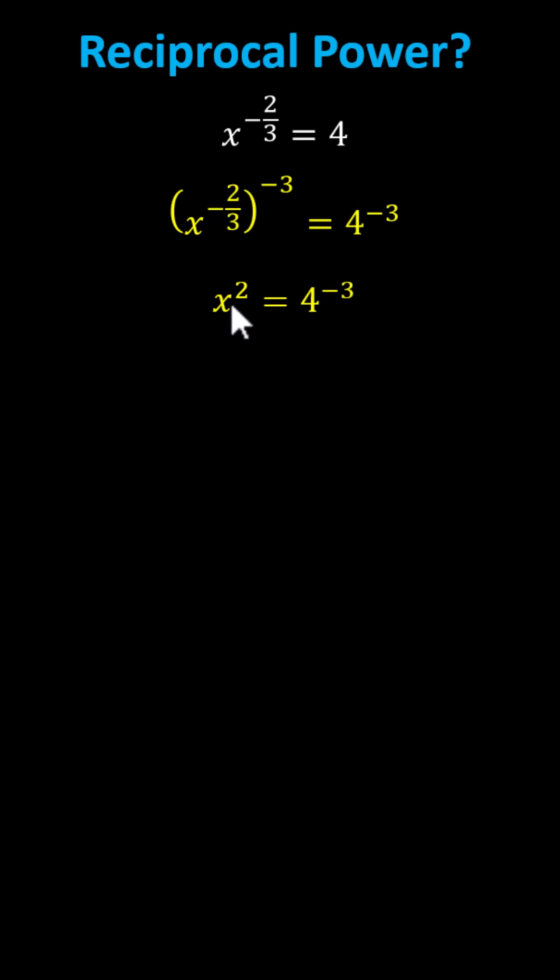To solve for x, we can now either square root both sides of the equation or raise both sides to the one-half power, but we also have to include a plus or minus on the right. Let's raise both sides to the one-half power.